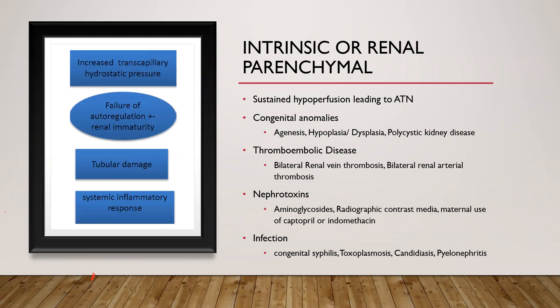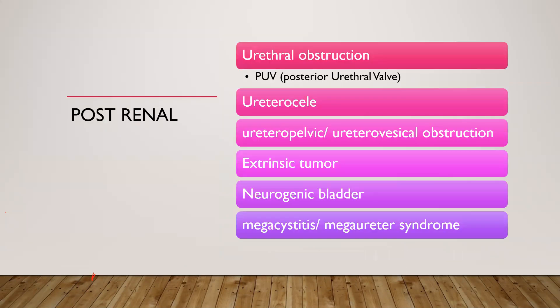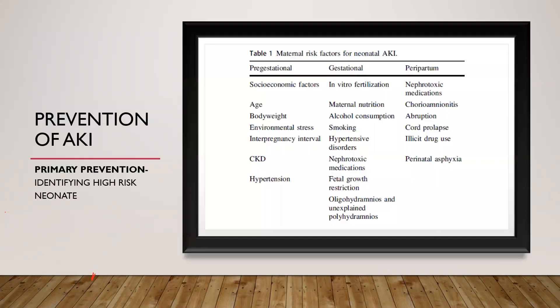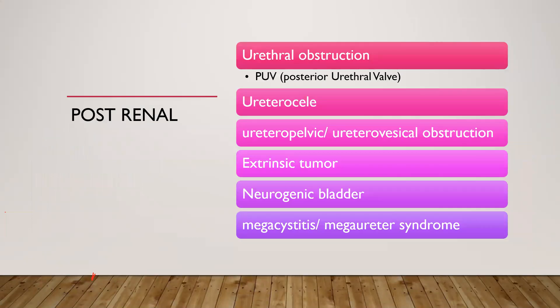Intrinsic renal parenchymal causes include sustained hypoperfusion leading to ATN — a pre-renal insult converted to a renal insult — congenital anomalies such as agenesis, hypoplasia, dysplasia, polycystic kidney disease, thromboembolic diseases, and nephrotoxic drugs like aminoglycosides, radiocontrast agents, and maternal use of captopril and indomethacin. Infections like syphilis, toxoplasma, and pyelonephritis can also cause intrinsic AKI. Post-renal causes include urethral obstruction, PUV, ureterocele, ureteropelvic or ureterovesical obstruction, extrinsic tumors, neurogenic bladder, megacystis, and megaureter syndrome.